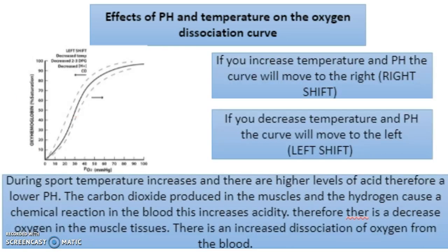Effects of pH and temperature on the oxygen dissociation curve: during exercise, temperature increases and there are higher levels of acid, therefore a lower pH. The carbon dioxide produced in the muscles and the hydrogen ions cause a chemical reaction in the blood, increasing acidity. Therefore there is a decrease in oxygen in the muscle tissues and an increased dissociation of oxygen from the blood. If you increase the temperature and lower the pH, the curve will shift to the right — this is called a right shift. If you decrease temperature and raise the pH, the curve will move to the left.